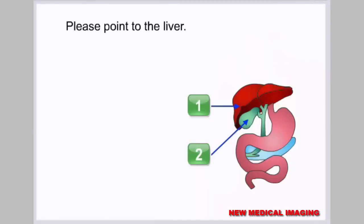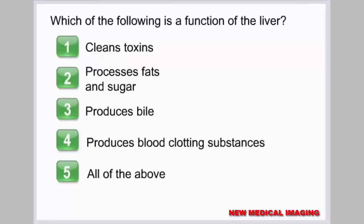Interactive review: The viewer is asked to identify the location of the liver and select all functions of the liver, including cleaning toxins, processing fats and sugar, producing bile, and producing blood clotting substances. The correct answer is all of the above.